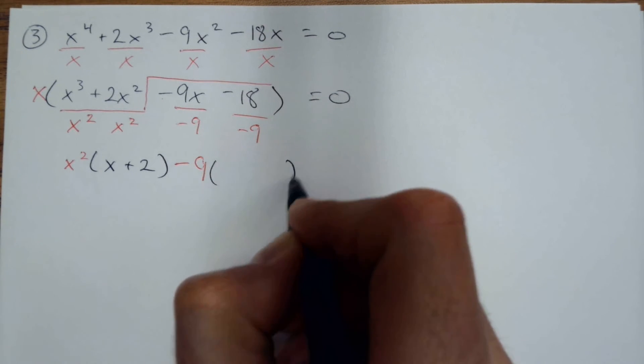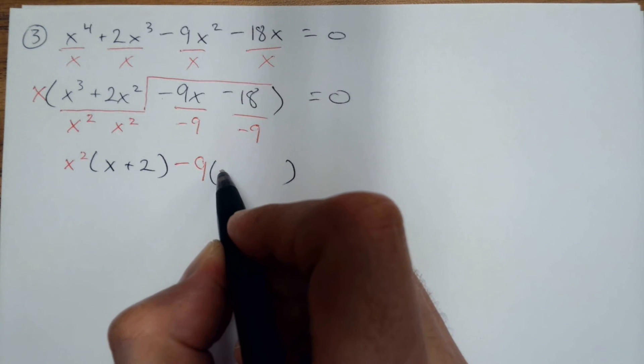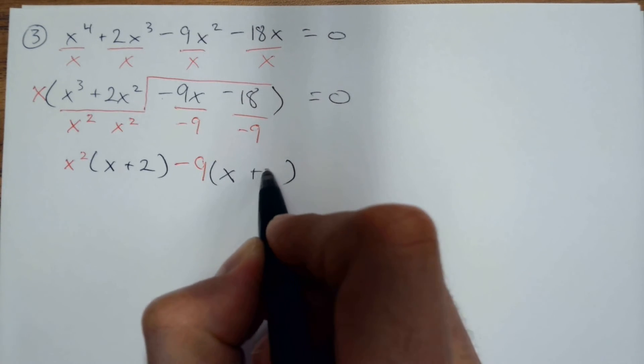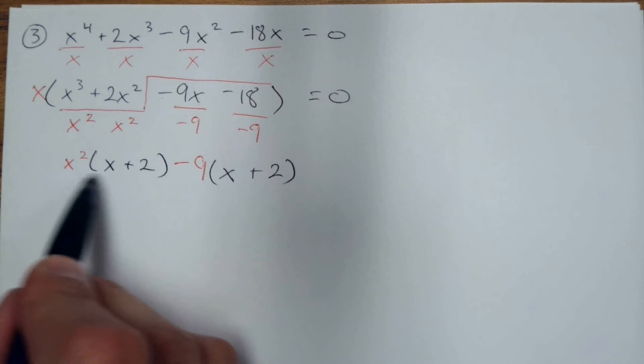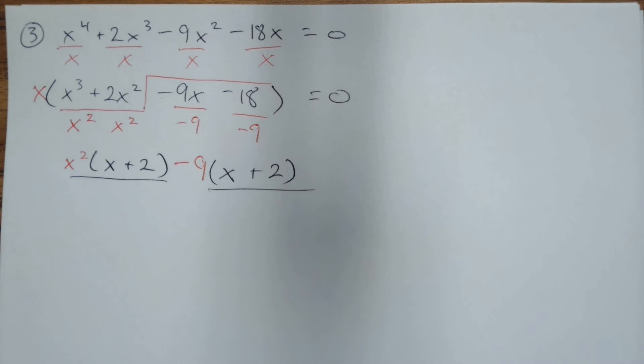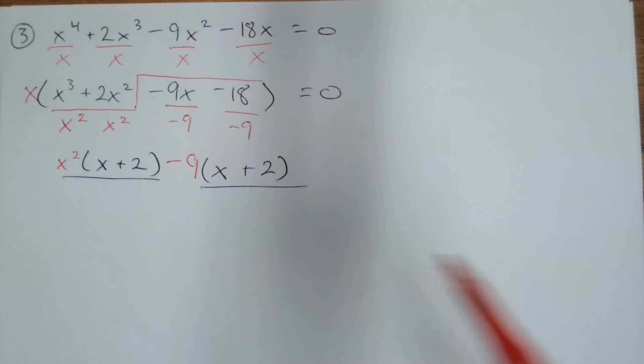Whatever you divide by goes on the outside, and you get x plus 2. You want these to be the same, the x plus 2 and the x plus 2. The shortcut would be just to write the x plus 2 on the outside, and then x squared minus 9.